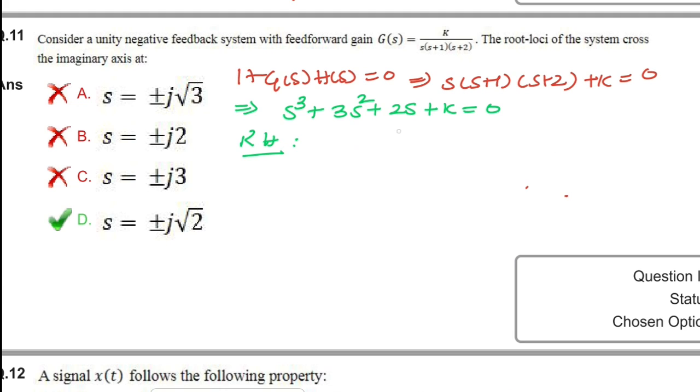We will write the Routh-Hurwitz tabular column. We have s³, s², s¹, and s⁰. First coefficient 1, next one 2, next 3, and fourth one is k. We'll do cross multiplication here, so 3×2 = 6, (6-k)/3 here, and finally k here.